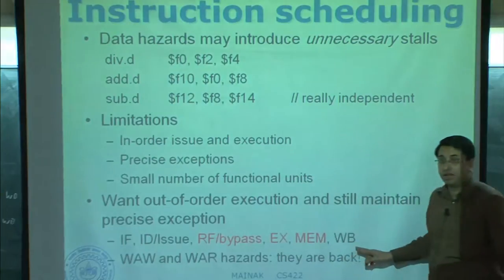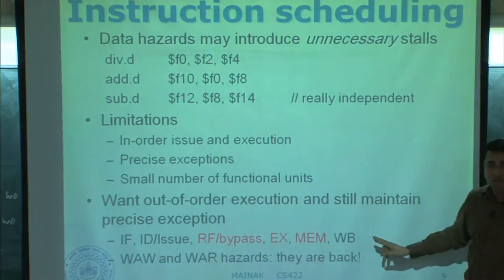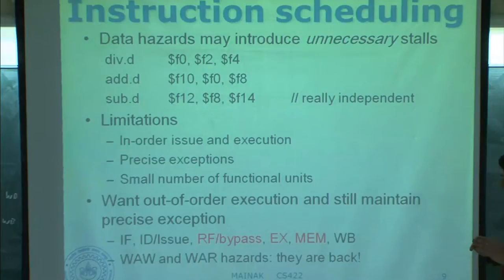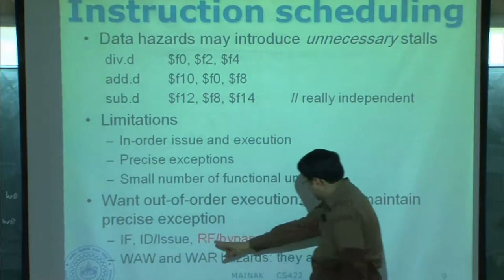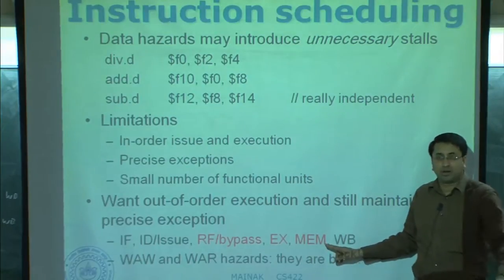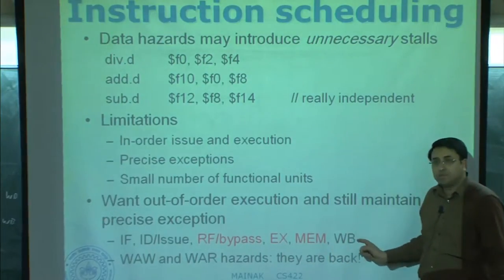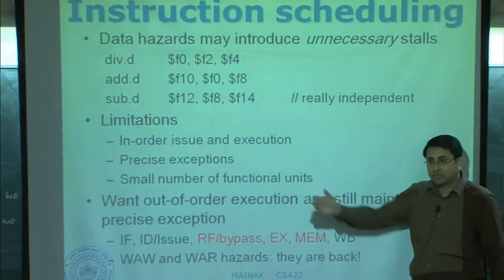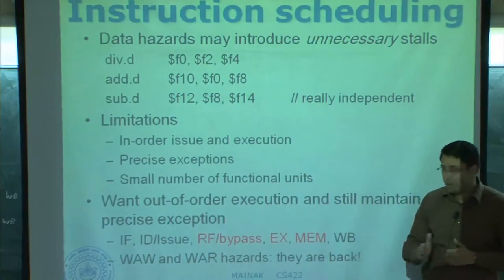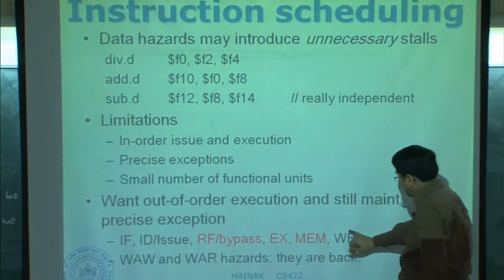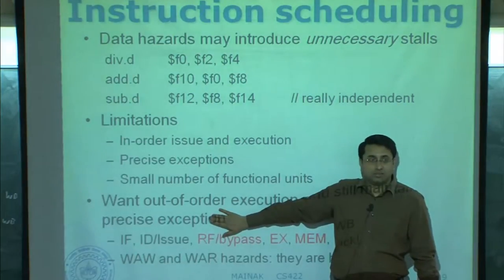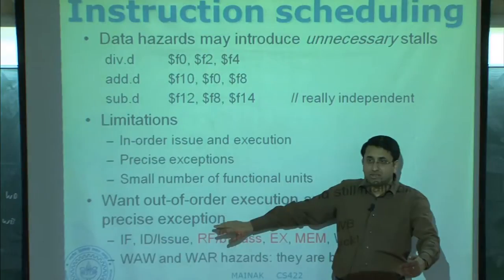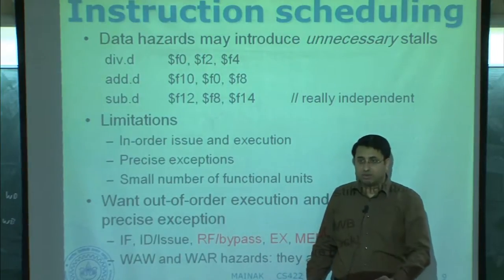The values are transferred to the register file and that is when the write-back phase executes. So I am decoupling the pipeline of an instruction into three phases: the front end which is completely in order, the middle execution phase which is totally out of order, and the write-back phase which happens later when the instruction's turn comes to complete. This makes sure you have no problem with precise exceptions — you can catch exceptions in order and cancel instructions which are after the excepting instruction.